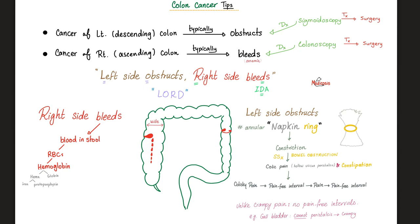Doctors have memorized this for years: left side obstructs, right side bleeds. The left colon, or descending colon — when cancer happens here, it obstructs, giving you the classic napkin ring appearance. Why? Because the descending colon is naturally narrower than the ascending colon, so the cancer can grow, rotate, squeeze, and obstruct, causing the napkin ring appearance and giving you constipation and colic pain.